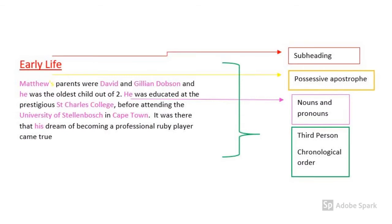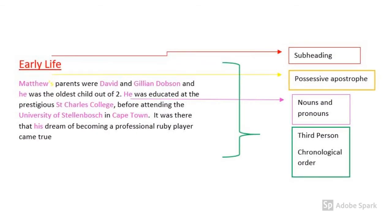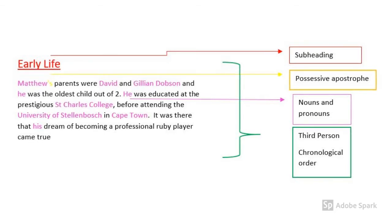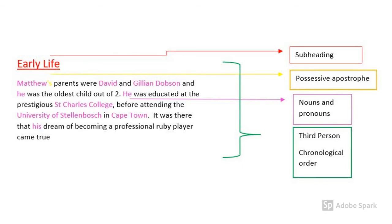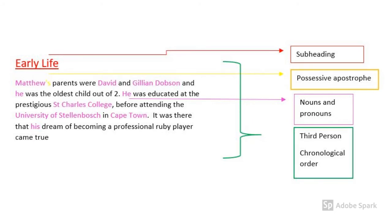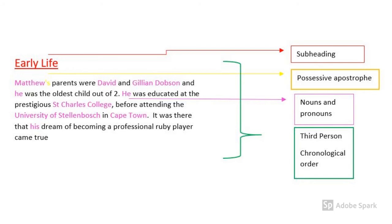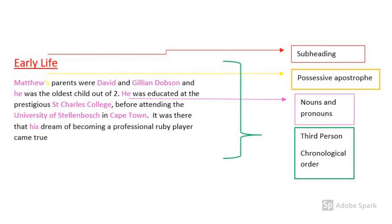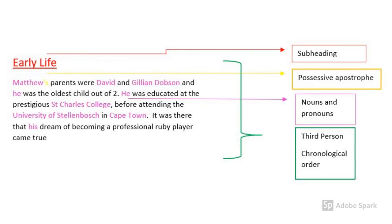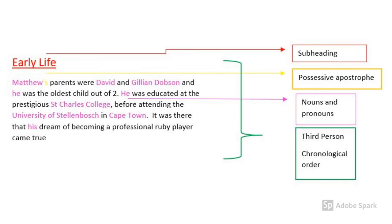Again, using the information that I've collected, I have a subheading of 'Early Life.' It says 'Matthew's parents were David and Gillian Dobson and he was the oldest out of two. He was educated at the prestigious St Charles College before attending the University of Stellenbosch in Cape Town. It was there that his dream of becoming a professional rugby player came true.' As you can see from the writing, I've started with a subheading telling you what's going to be in that paragraph. I've used my nouns and my pronouns — I've said 'Matthew,' I've said 'he,' I've said 'his' — and it's written in the third person, so it's someone telling the story. It is also in chronological order: from when he was born, what school he went to, then what university he went to.